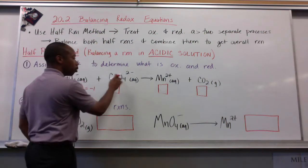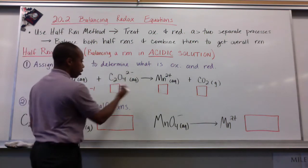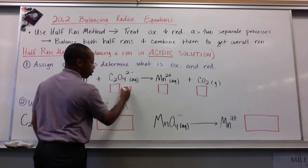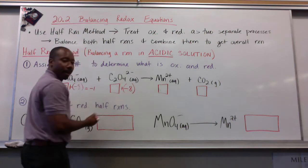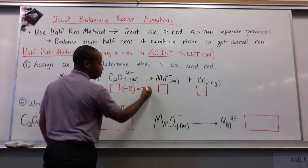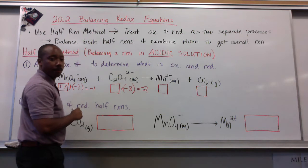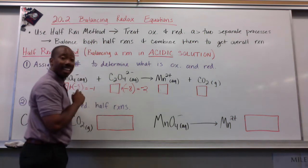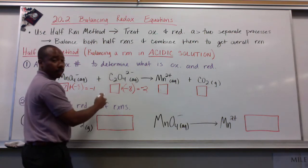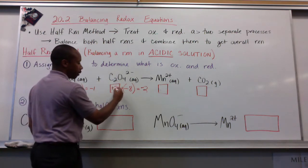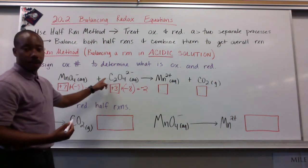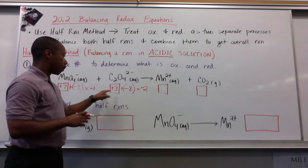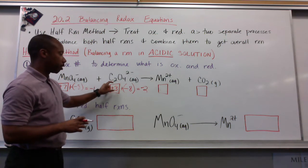Now, we have C2O4 2- here. Oxygen, again, minus 2 times 4 gives you minus 8. So what plus minus 8 is going to give you a minus 2 charge or a 2- charge there? And it's going to be positive 6. But since we have 2 carbons here, it's positive 3 because each carbon contributes to the 6 there. Each carbon is plus 3. I have 2 of them making plus 6.